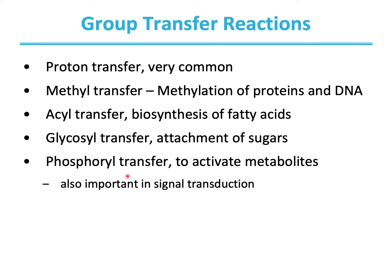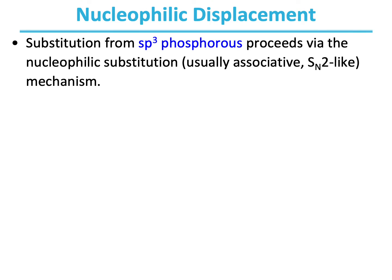Phosphoryl transfer is usually done to activate metabolites and is also an important part of signal transduction. Substitution from the sp3 hybridized phosphorus in a phosphoryl transfer reaction proceeds via nucleophilic substitution, which is usually an associative SN2-like mechanism.